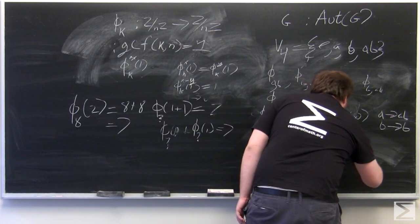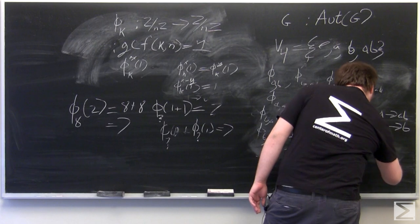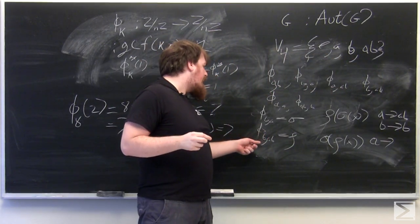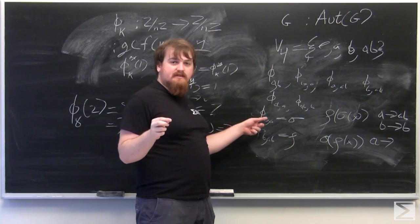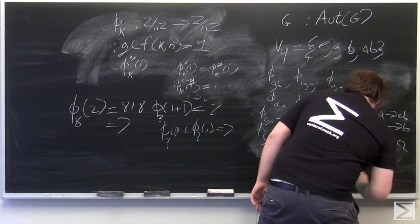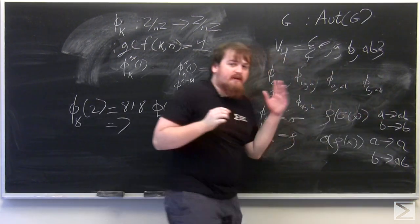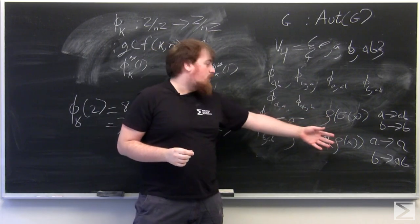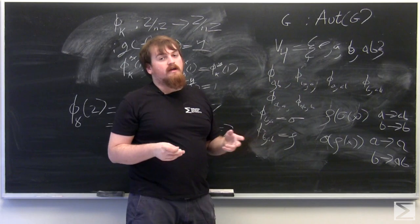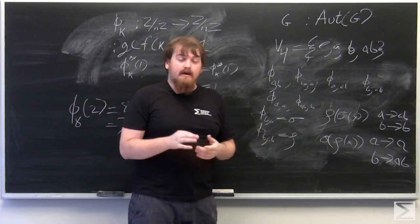If we look at the composition in the other order of sigma of rho of X, then where does A get sent? A gets sent through rho to B, and then B gets sent through sigma to A. So A gets sent to A, and then B gets sent to AB. So these are not the same function. So rho and sigma don't commute, and thus the automorphism group Aut V4 is not an abelian group, even though V4 itself is abelian, which might not be intuitive.